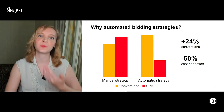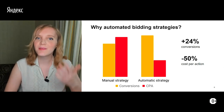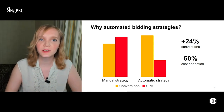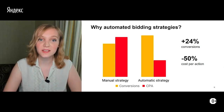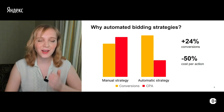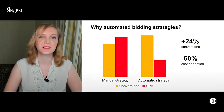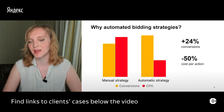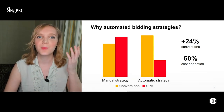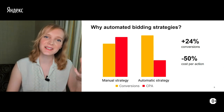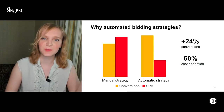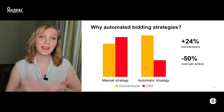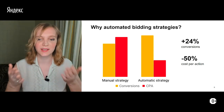Another thing I really like about smart bidding is that it saves a lot of time. You can spend that saved time analyzing data, creating new hypotheses, or improving your landing page, for example. With automated strategies you stay more focused on your business value and profit. On average, you can gain around 25% additional conversions and reduce cost per action by half. We have many client cases, and Juliana will send you some links.